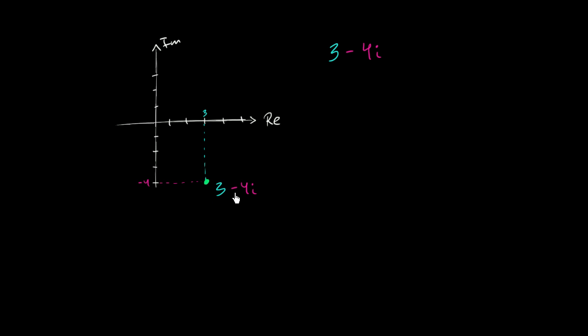I have the complex number 3 minus 4i. I've plotted it on the complex plane. We see that the real part is 3, so we've gone 3 along the horizontal axis, or the real axis. And the imaginary part is negative 4, so we've gone down 4 along the vertical axis. This right here is the point 3 minus 4i.